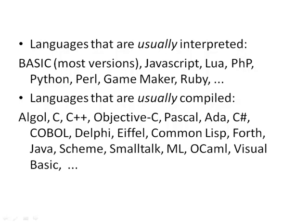Languages usually interpreted include most versions of BASIC, JavaScript, Lua, PHP, Python, Perl, GameMaker, and Ruby — a lot of web programming and scripting languages. Languages that are usually compiled include a huge range: C++ and C Sharp are in this list as well as a wide range of others.